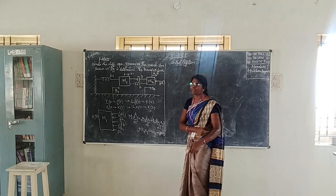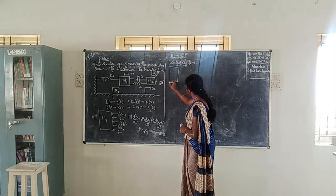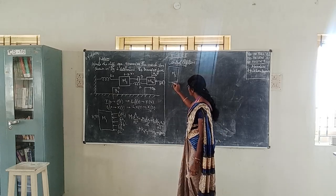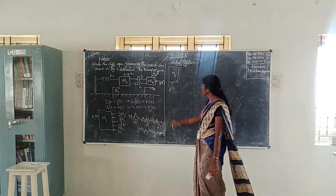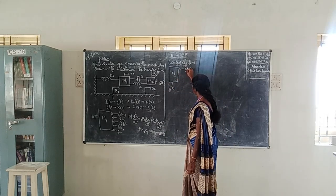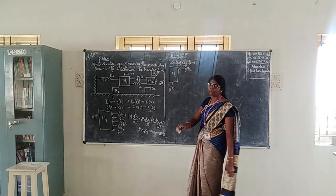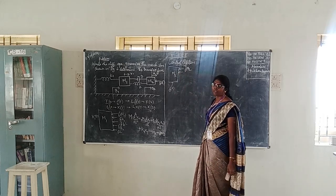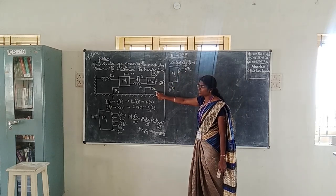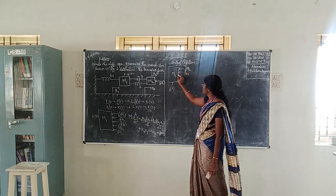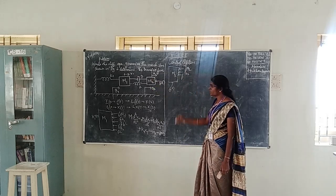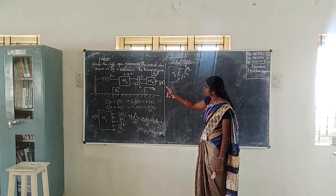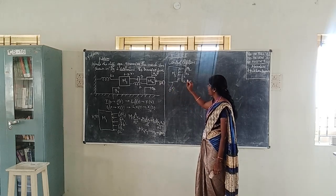Now we write the differential equation governing mass M2. For M2, the input is F(t). We consider the forces on M2: first write the M2 term, then dashpot B2 connected to M2, dashpot B which is common to both M1 and M2 (so written as B(x2 - x1)), and spring K which is common to both masses. There is no individual spring directly connected to M2 only.